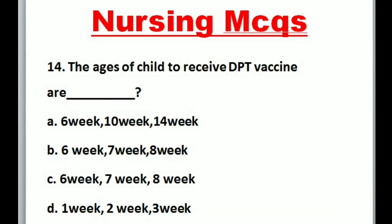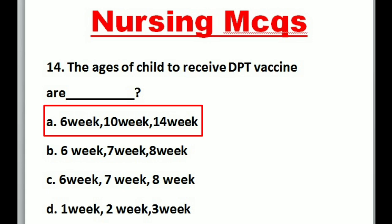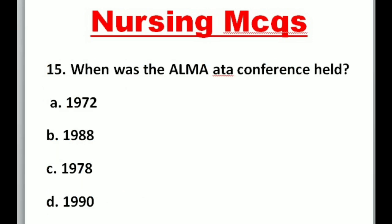Question 14: The ages of a child to receive DPT vaccine are — A. 6-week, 10-week, 14-week; B. 6-week, 7-week, 8-week; C. 6-week, 7-week, 8-week; D. 1-week, 2-week, 3-week. Correct option is A: 6-week, 10-week, 14-week.